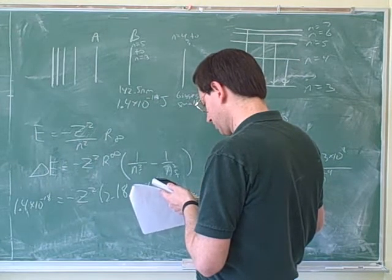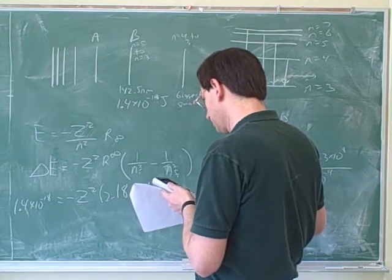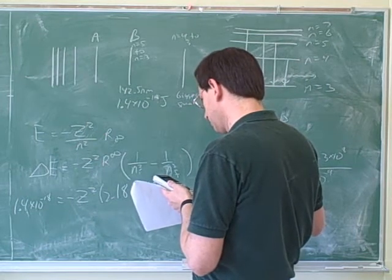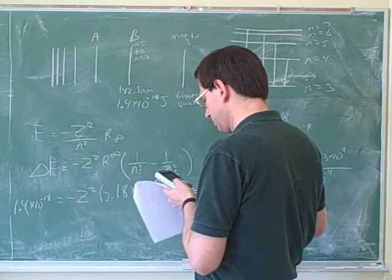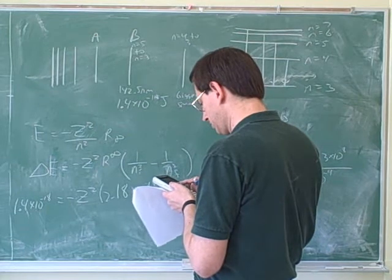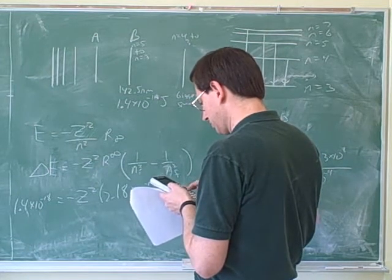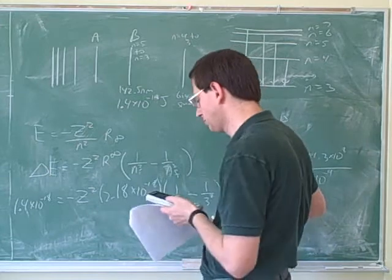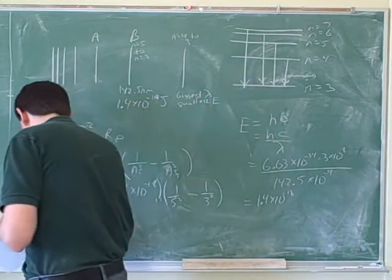The one with a z of 3, which is lithium. Z equals 3 is lithium. Because that's the number, that's its atomic number.